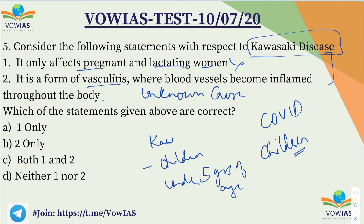In Kawasaki disease, blood vessels are inflamed and painful. Symptoms include red eyes, rashes, swollen tongue with red lips — also called strawberry tongue — inflamed blood vessel system throughout the body, and constant high fever. The second statement is correct — it is a form of vasculitis. The answer is B, only 2.